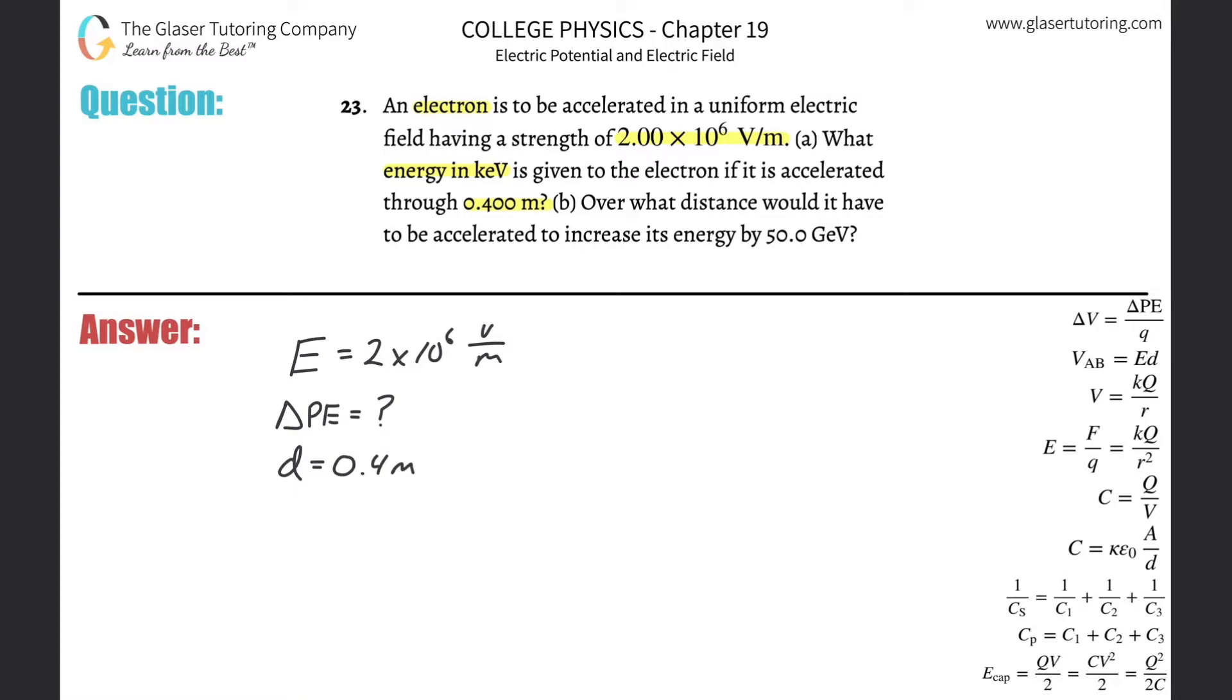They told us an electron. As soon as you hear that, if they say a proton or an electron or a doubly charged ion, whatever it is, you know that the base charge of an electron or proton, the magnitude that is, is going to be 1.6 times 10 to the minus 19th Coulombs. It's the magnitude.